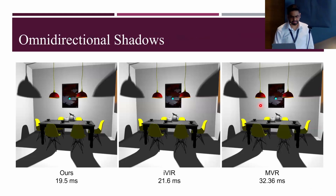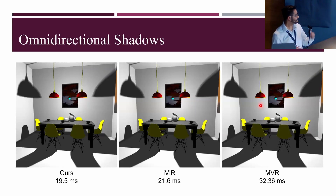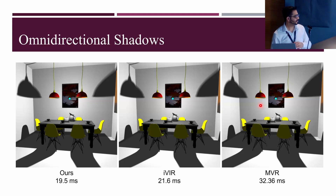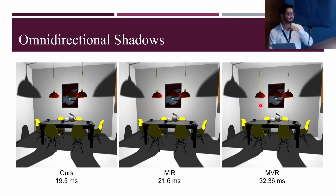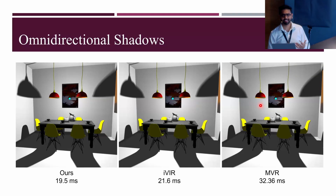Shadow results: our implementation took about 20ms, IVIR took 21ms, and MVR took 32ms. These improvements are modest. The reason is that most of our gains come from saving on shading, and in shadows there is not much shading to do.